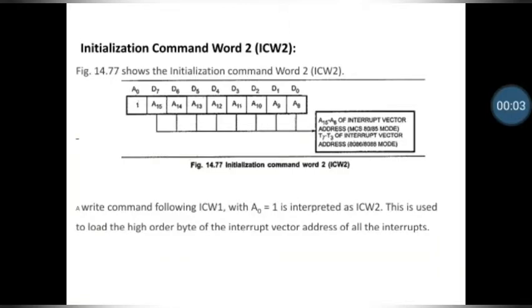Hello friends, welcome to my channel Technical Classes. In the last video we discussed the commands present in 8259. In that video I explained the first command word, that is the initialization command word 1. Today we will discuss initialization command word 2. ICW2 is used for interrupt vector address. As you can see in the figure, it contains 9 bits, in which the last bit, A0, is already set to 1, indicating that you are using initialization command word 2.